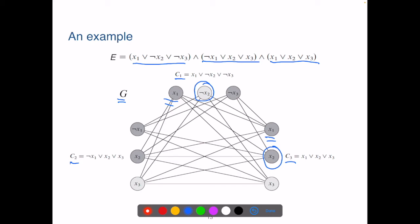So the three vertices in the clique must be from three different clause groups. If there is such a clique, like in this example, these three points,